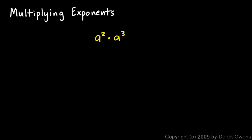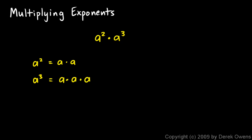To do this, remember what an exponent means. a squared means a times a — that 2 in the exponent position means we multiply a by itself; it's not a times 2, it's a multiplied by itself with a total of 2 factors. Likewise, a cubed, a to the power of 3, means a times a times a — a total of 3 factors.